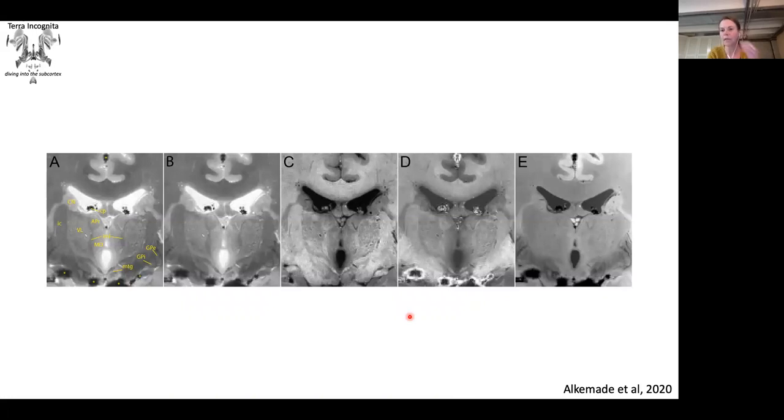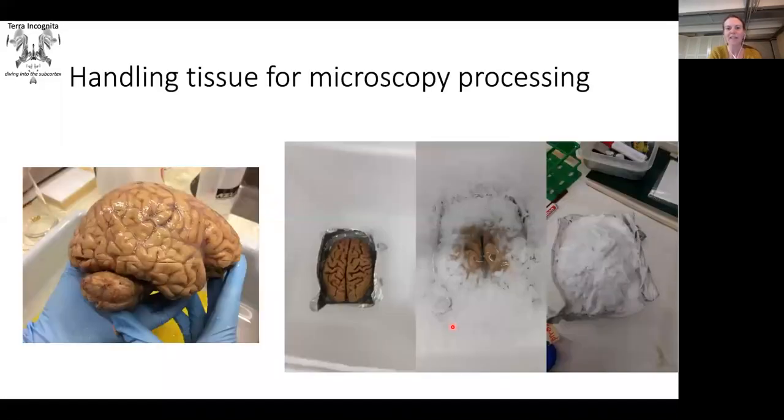But again, using post-mortem tissue, it also has advantages. As you can see here, you can scan with a high level of detail. This is in part because you can scan for a very long time. And these beautiful images were created at the Max Planck Institute using the NPM scans of Nick Weiskopf. And Evgenia was very much involved in acquiring these images together with other people such as Karen Pine.